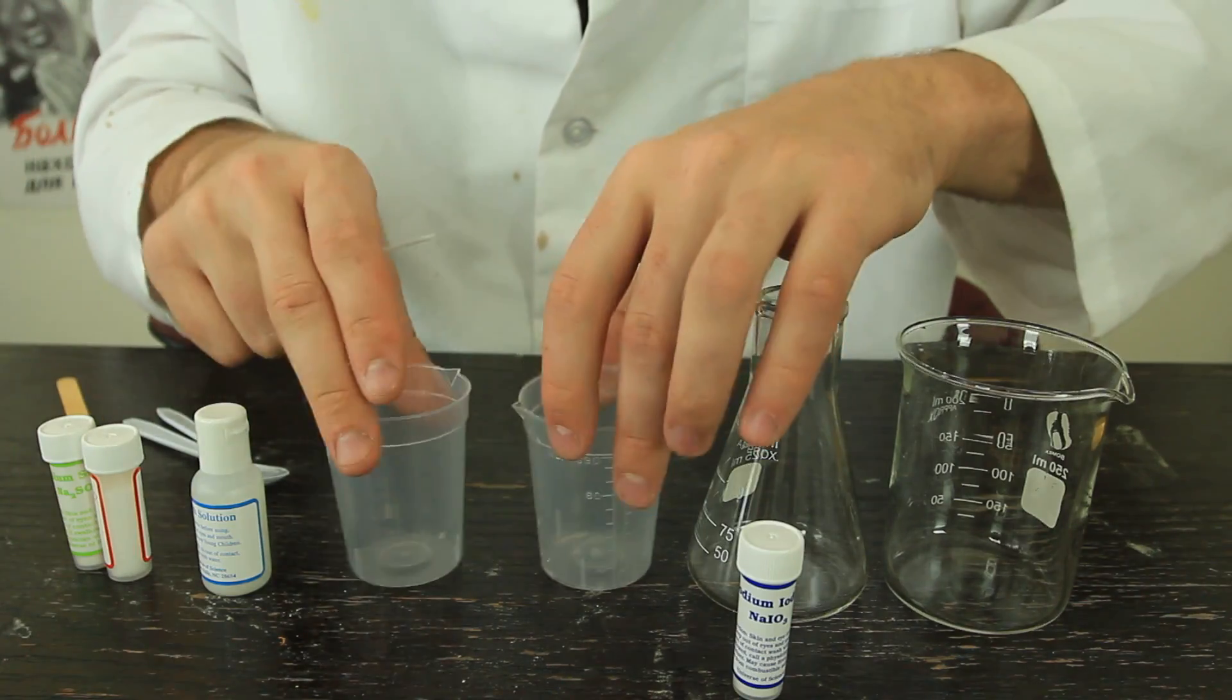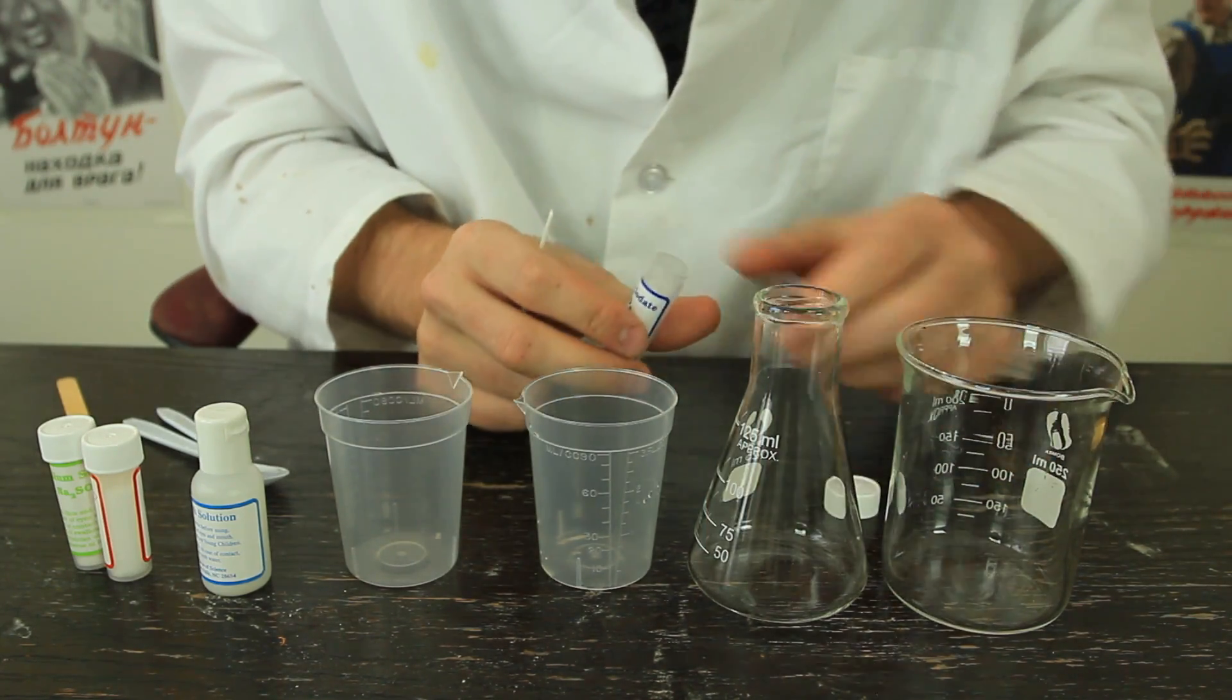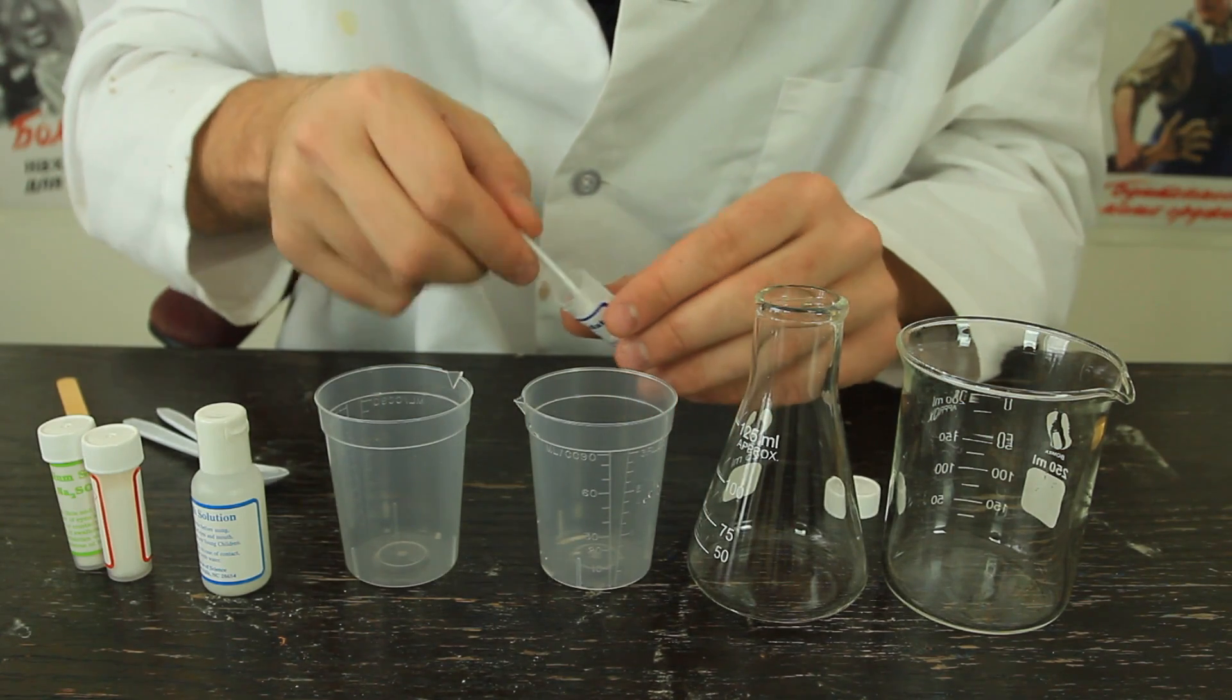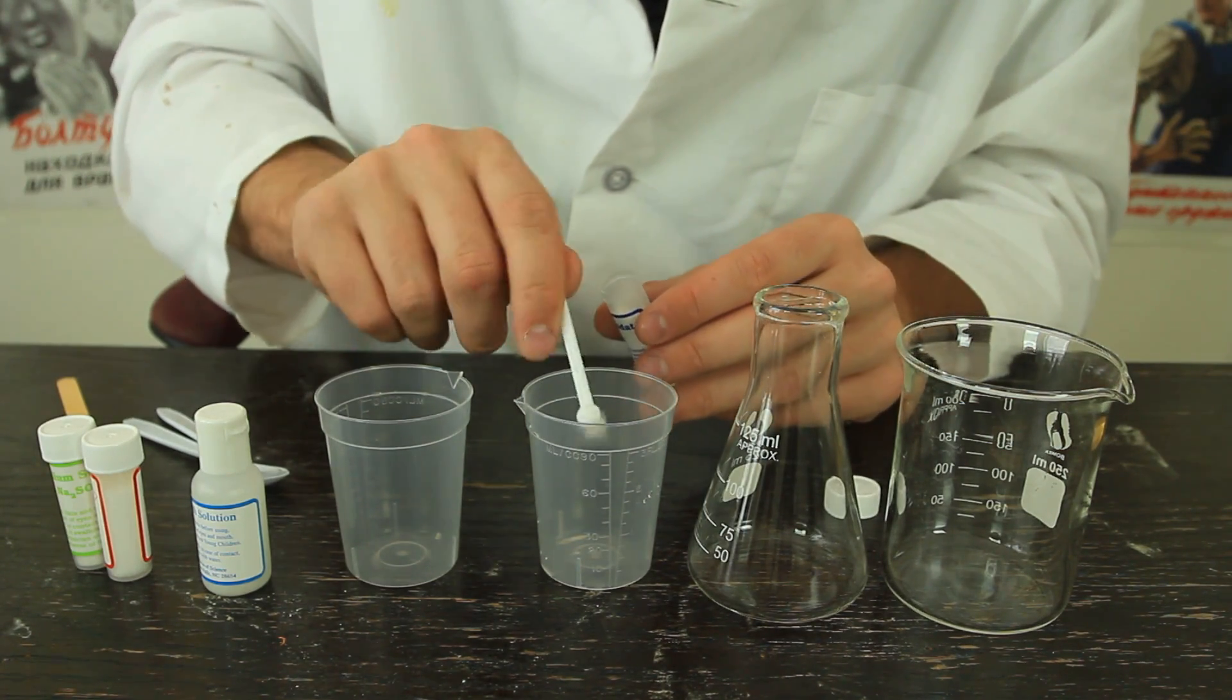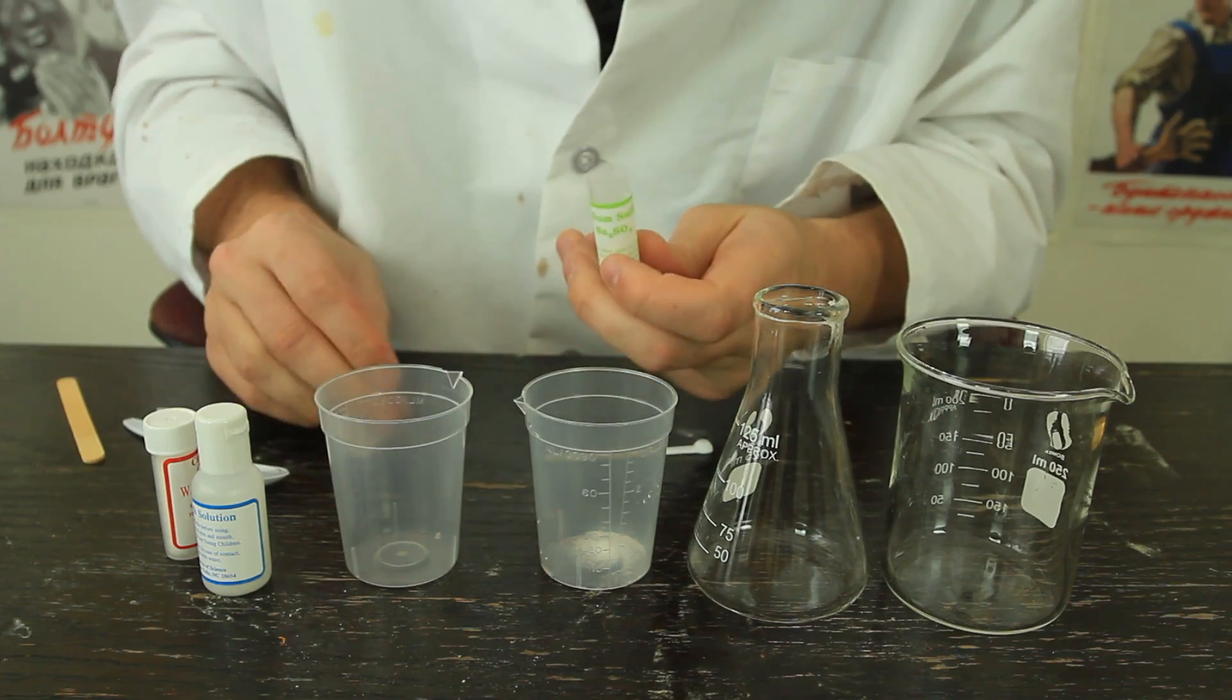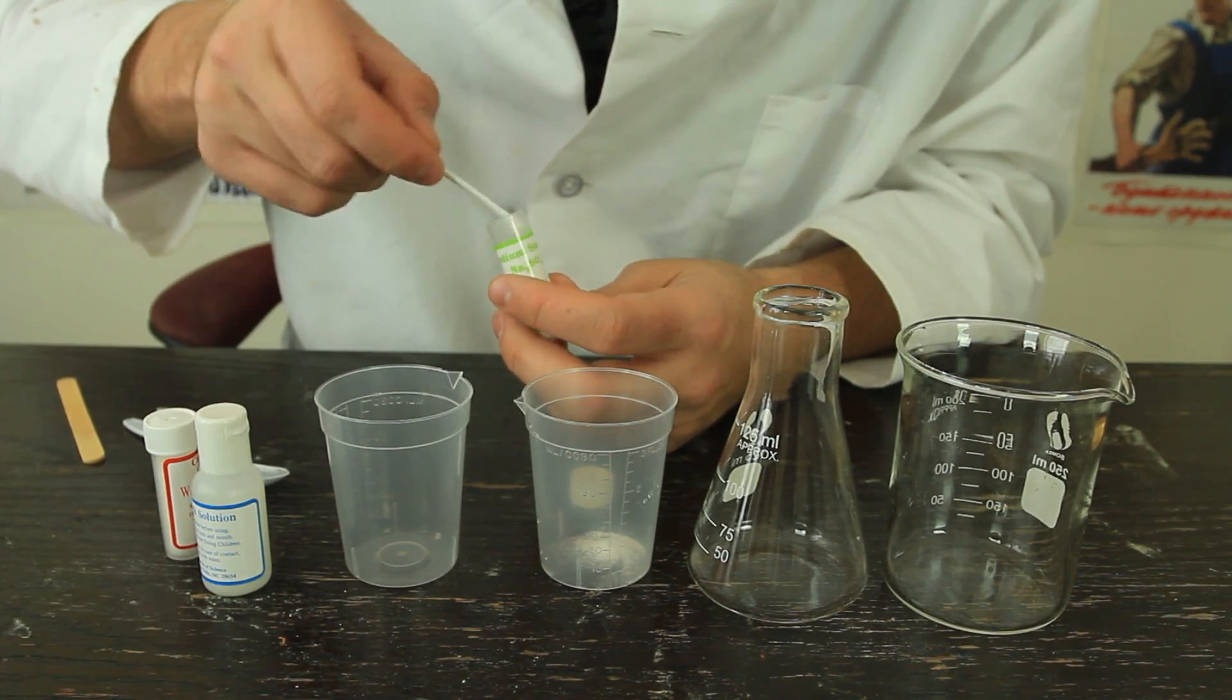And we have here two mixing containers, and what I'm gonna do is grab sodium iodide, and grab one small spoon, like mini spoon, like that, and drop it in there. Then I'm gonna grab sodium sulfide, half a spoon, or half a small spoon,